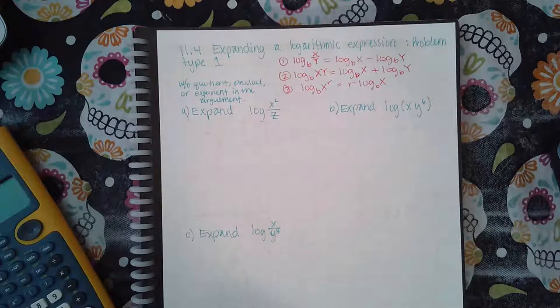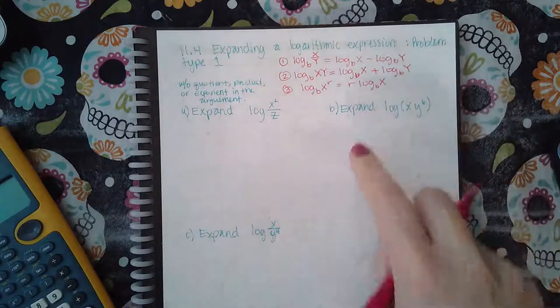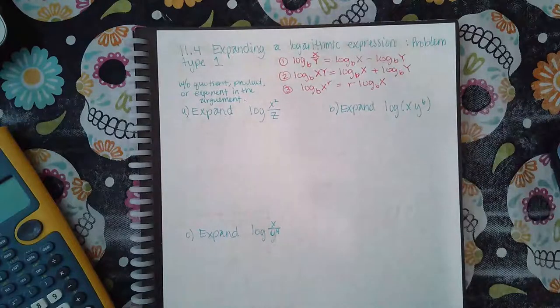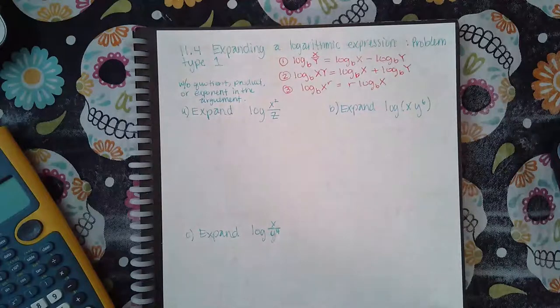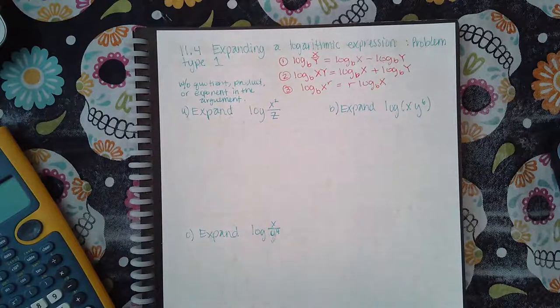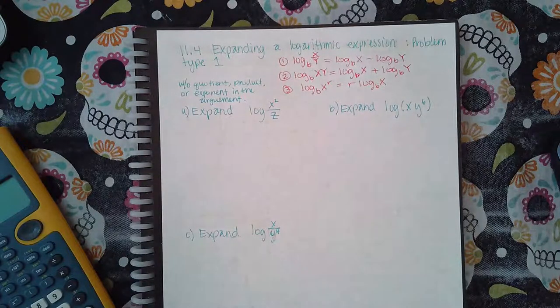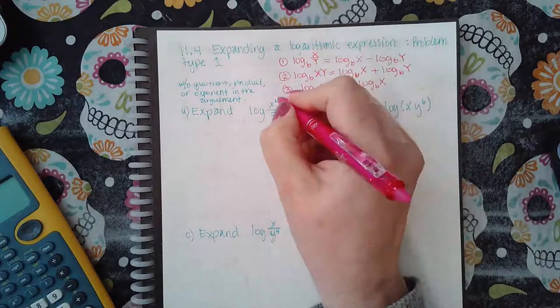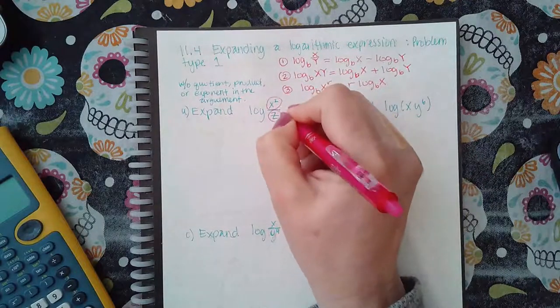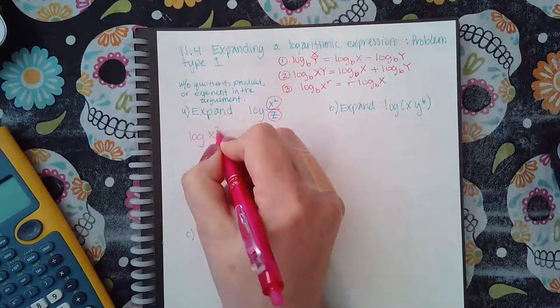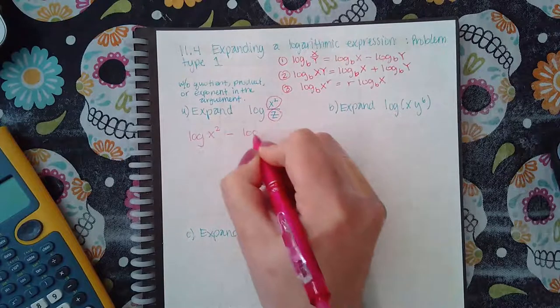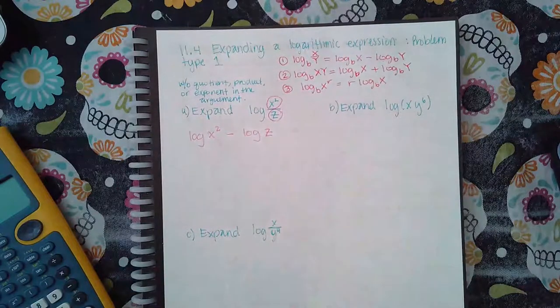First, here's the order in which you need to apply the properties so that you can be sure that you did it correctly. The first thing you want to do is break up any quotients. So I do have a quotient—I have the numerator and then I have the denominator. So when I break up this log, it's going to be the log of the numerator minus the log of the denominator.